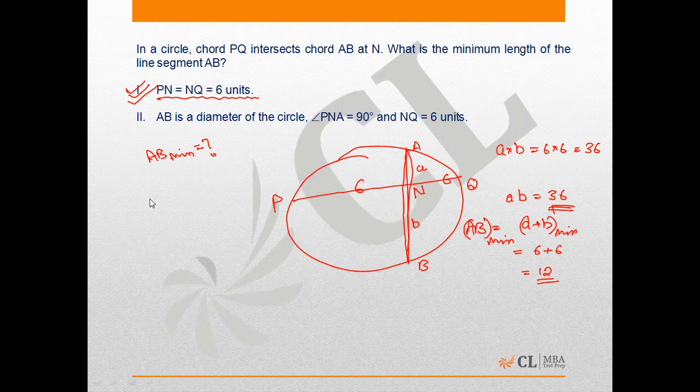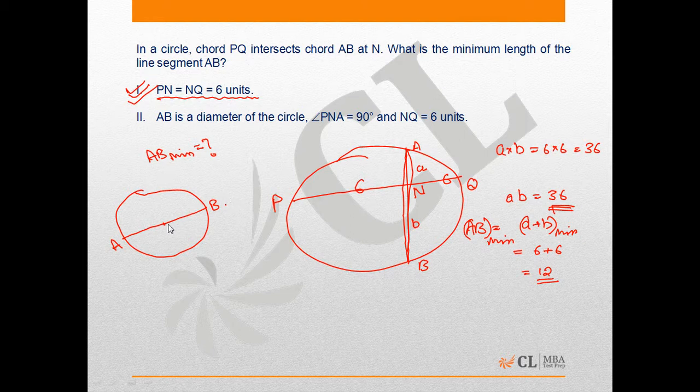It says AB is a diameter of the circle. So I draw another circle. AB is the diameter of the circle. And I want the diameter minimum. That means I want the minimum possible circle, the radius minimum. It says PNA is 90 degrees. PNA is 90 degrees. So this is N. This is 90 degrees. And this length NQ is 6.